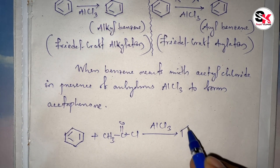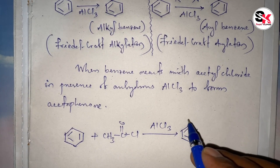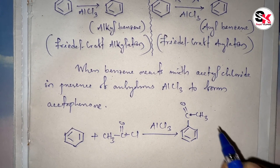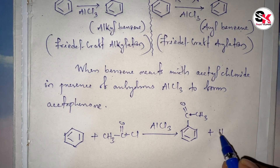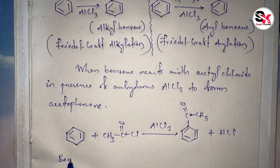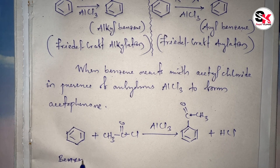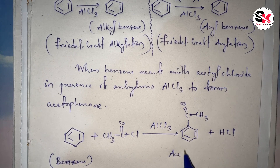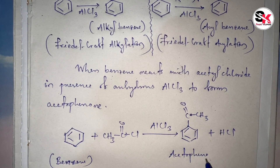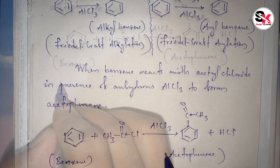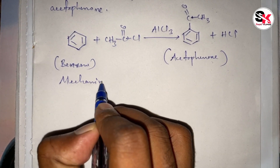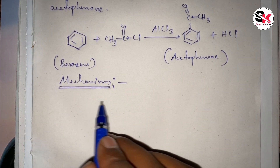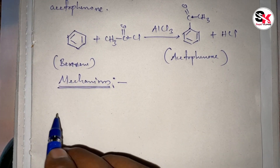So benzene reacts with acetyl chloride in presence of anhydrous AlCl3 to form acetophenone plus HCl. Now let us discuss the mechanism of this Friedel-Craft acylation reaction. Its mechanism is quite similar to Friedel-Craft alkylation reaction.